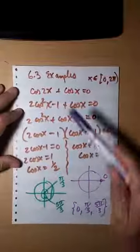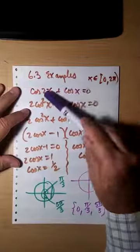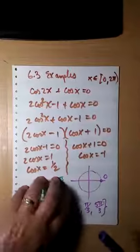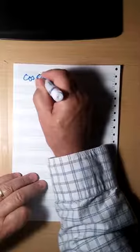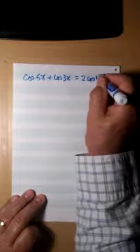So sometimes you have to use a trig identity to get these angles the same. Okay, what happens when you've got a problem like cosine 5x plus cosine 3x equals 2 cosine 4x?